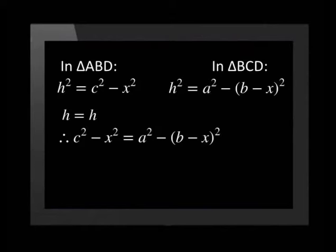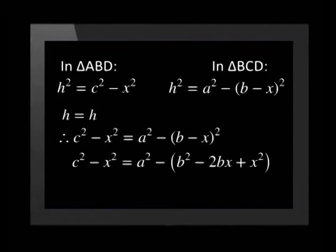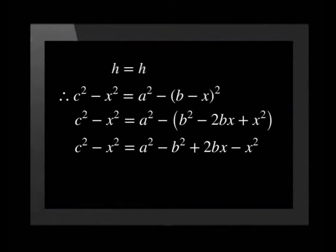Expanding the brackets would give us C squared minus X squared is equal to A squared minus, open brackets, B squared minus 2BX plus X squared. Removing the brackets would give us C squared minus X squared is equal to A squared minus B squared plus 2BX minus X squared.